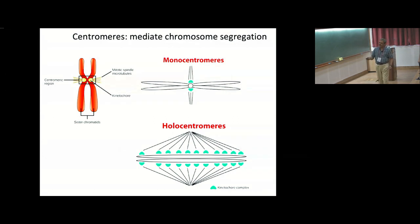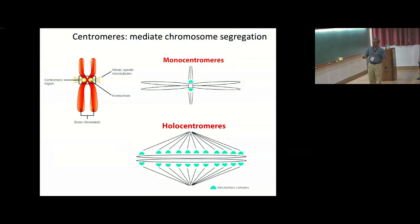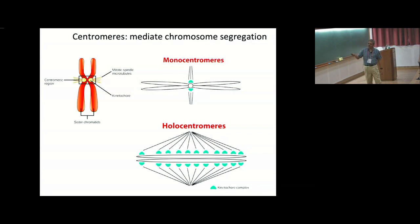Earlier studies in C. elegans showed CENPA runs along the chromosomes, but later work showed it's not the entire chromosome acting as a centromere—there are discrete sites along the chromosome acting as centromeres, making them more polycentric rather than holocentric. I don't know whether there is any mechanistic difference in how they segregate because they have metaphase, anaphase, and segregate normally. The proteins involved are mostly conserved, except there is no CENPA in insects, but C. elegans does have CENPA—yet it still has holocentromeres.